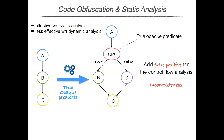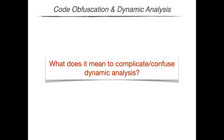Researchers generally agree that code obfuscation is effective against static analysis, while it seems to be less effective against dynamic analysis. Indeed, in this example, the insertion of a true opaque predicate is not able to confuse dynamic analysis, since there is no real program execution that would follow the false branch, and therefore the dynamic analysis cannot be confused. This means that adding false positives is not the right strategy for confusing dynamic analysis. So the question is: what does it mean to confuse dynamic analysis?